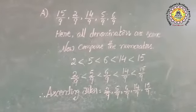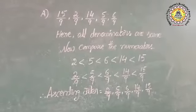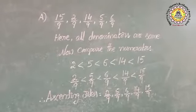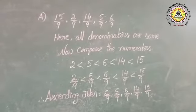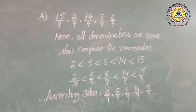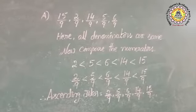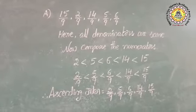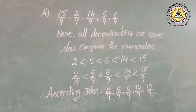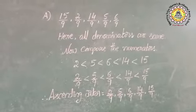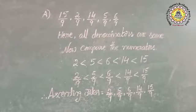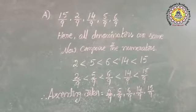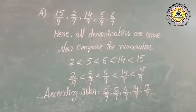The first one is 15 by 9, 2 by 9, 14 by 9, 5 by 9 and 6 by 9. For this one, first we have to write ascending order, then descending order. First we are writing ascending order. Just first observe all the denominators. All denominators are 9 — all are the same.